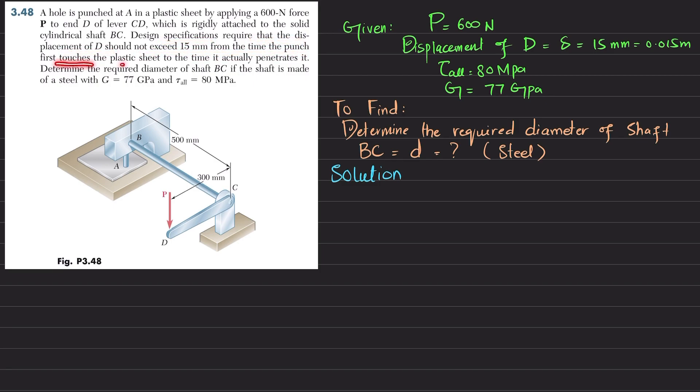Determine the required diameter of shaft BC if the shaft is made of steel with G equals 77 gigapascals and allowable shearing stress is 80 megapascals. You can see this is the point where the hole is to be punched by a force of 600 newtons applied at end D of lever CD.